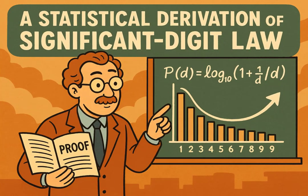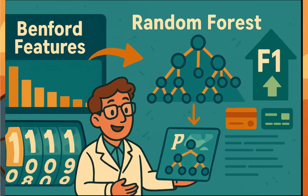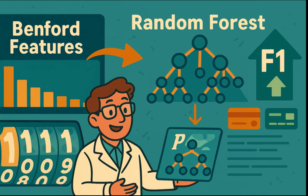Auditors love this. Fake invoices often cluster around round numbers — 90s, 80s. Run a Benford test and those spikes leap off the page. A 2024 teaching case walks students through nailing credit card fraud with nothing more than a first-digit check. And just this month, researchers paired Benford features with random forests, boosting F1 scores on a live card dataset.